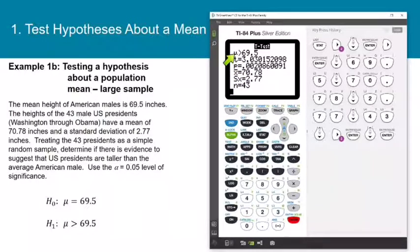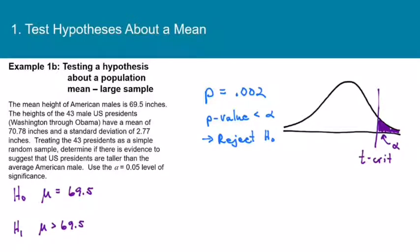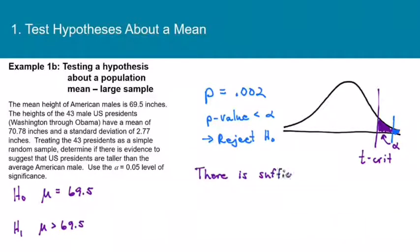The calculator gives us the test statistic and the p-value. The p-value is 0.002, which is much smaller than alpha equals 0.05. Since the p-value is less than alpha, we reject H-naught. To link that to the classical approach: a p-value of 0.002 would fall very far into the shaded rejection region. We conclude there is sufficient evidence that the mean height of U.S. presidents is greater than 69.5 inches.